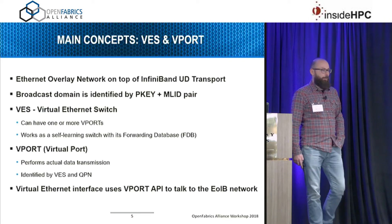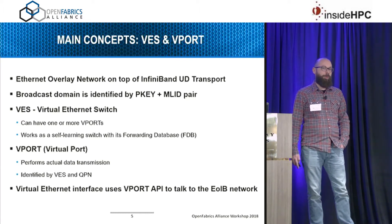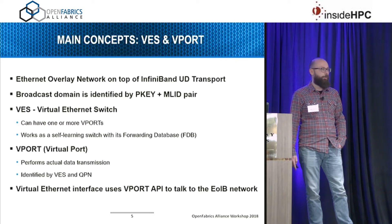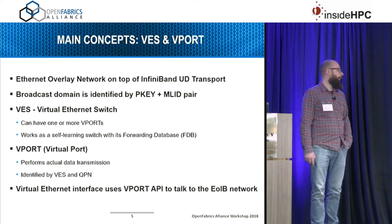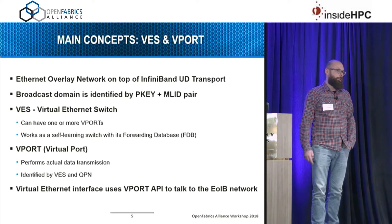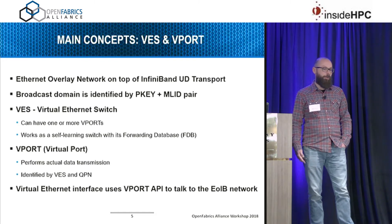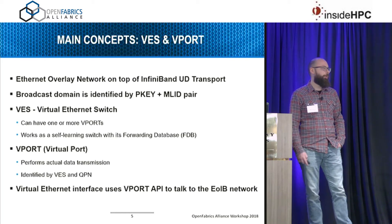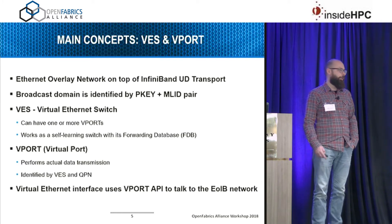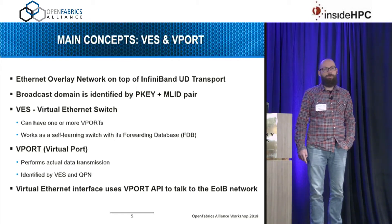Let us reiterate on the main concepts. Our driver provides overlay Ethernet networks on top of InfiniBand UD transport. Each overlay network is identified by the PKEY and MLID. A host connected to a particular network has a VES instance on it. VES contains the forwarding database (FDB) that maps MAC address to the remote virtual port. The virtual port is the entity performing actual communication, identified by the QP number, and it provides an API to the net device level.